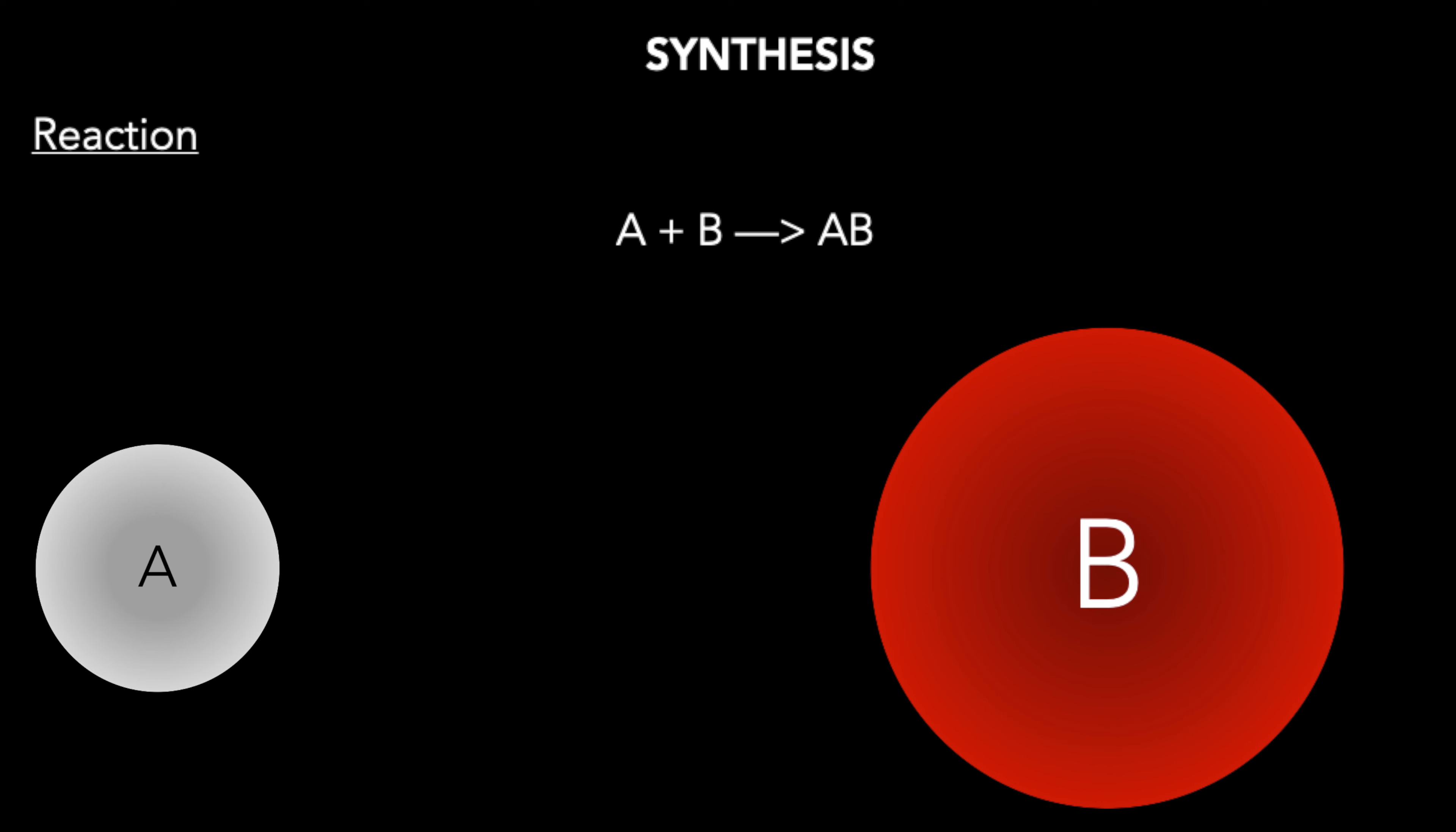We'll call them reactant A and reactant B. These can be elements or they can be compounds. When reactant A and reactant B react, they always merge together to make one single more complex substance.